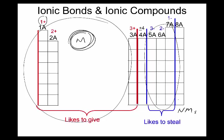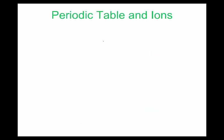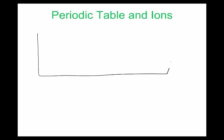Non-metals gain electrons from metals because they're closer to their octets and want to fill them. Columns 5, 6, and 7 have five, six, and seven valence electrons, respectively, so they're close to getting eight. Metals, on the other hand, are closer to a full shell on their previous level when they lose electrons. So ionic bonds form between metals and non-metals.